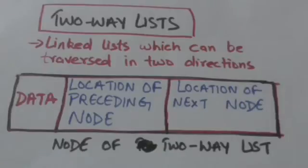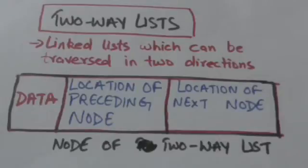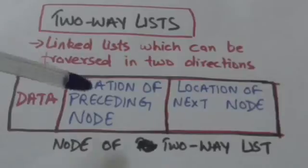One part contains the location of the preceding node in the list, and this part of the first node of the list contains a null pointer.